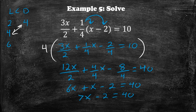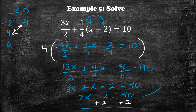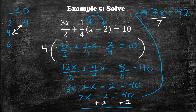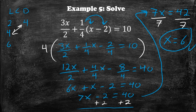We bring the 2 over by adding 2 to both sides, giving us 7x is equal to 42. To get rid of the 7 in front of the x, we do the opposite and divide both sides by 7. That gives us x is equal to 6. That is our final answer.